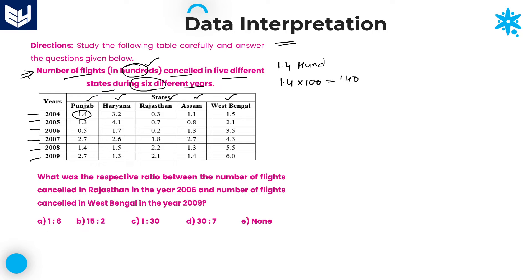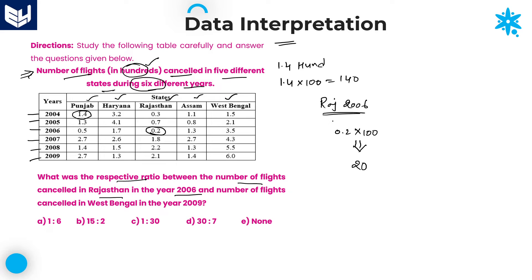Now look at the first question. What was the respective ratio between number of flights cancelled in Rajasthan in the year 2006? He is talking about Rajasthan and the year is 2006. Once look at the table and observe the value of Rajasthan in 2006 — Rajasthan is the third state and 2006 value is equal to 0.2. It is 0.2 into 100, which is equal to 20. Number of flights cancelled in Rajasthan in the year 2006 is 20.